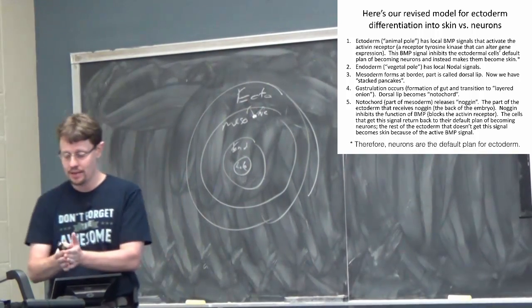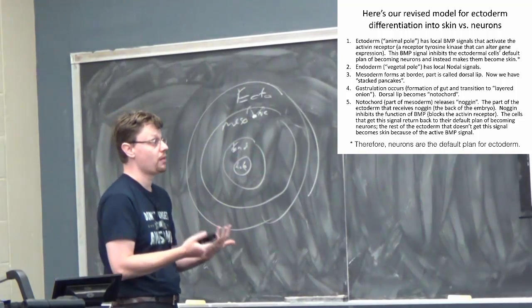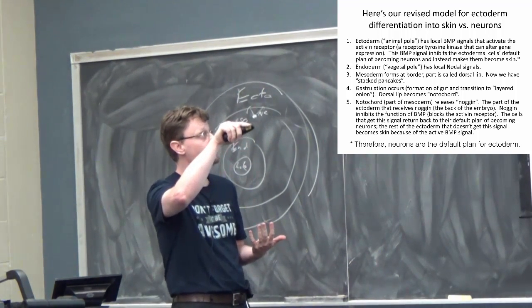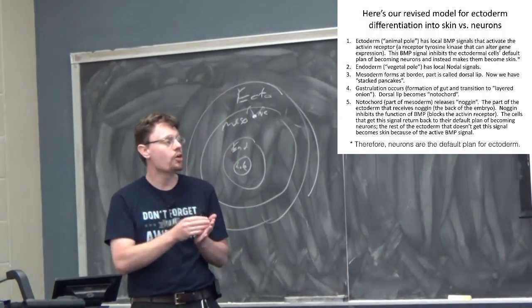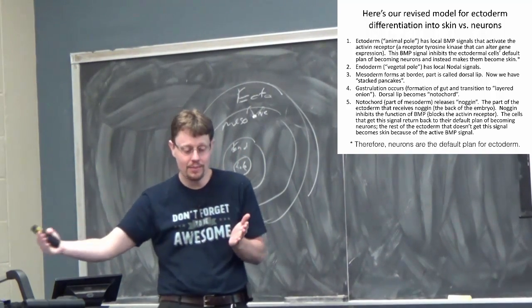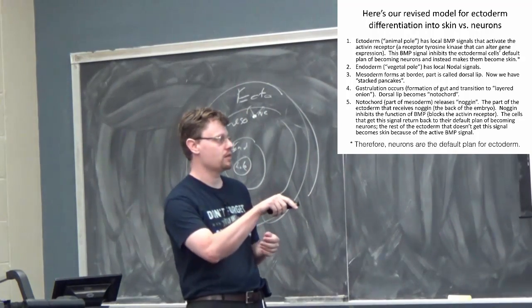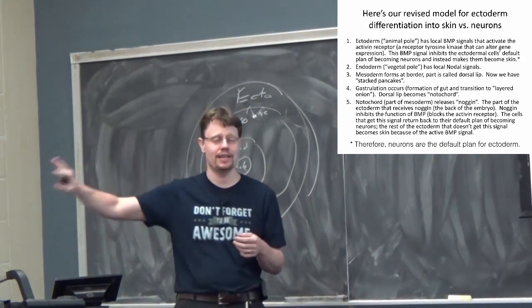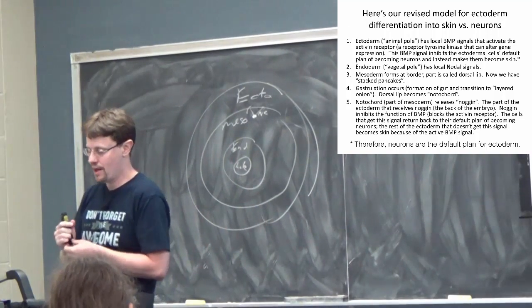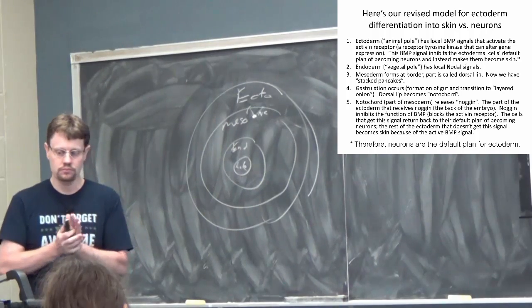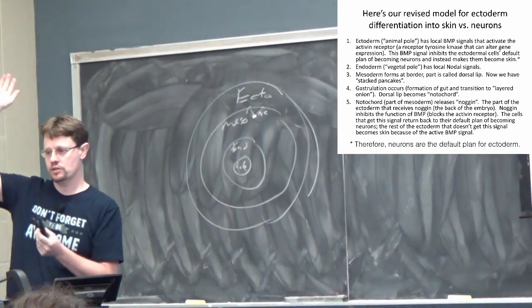And again, the part of the ectoderm that's getting the noggin signal at the back of the embryo becomes brain. The new thing that we now know is that noggin doesn't have its own receptor. Noggin binds to the activin receptor and blocks it from doing anything. And so it is a natural antagonist, a natural blocker that blocks this receptor and gets in the way of this BMP signal. And so the cells that get this block actually are getting not a signal because the signal's being blocked, go back to their original life's goal of being brain cells. And the peer pressure signal has been turned off. And then the rest of the ectoderm that's not getting this inhibition becomes skin by the active presence of the BMP signal.